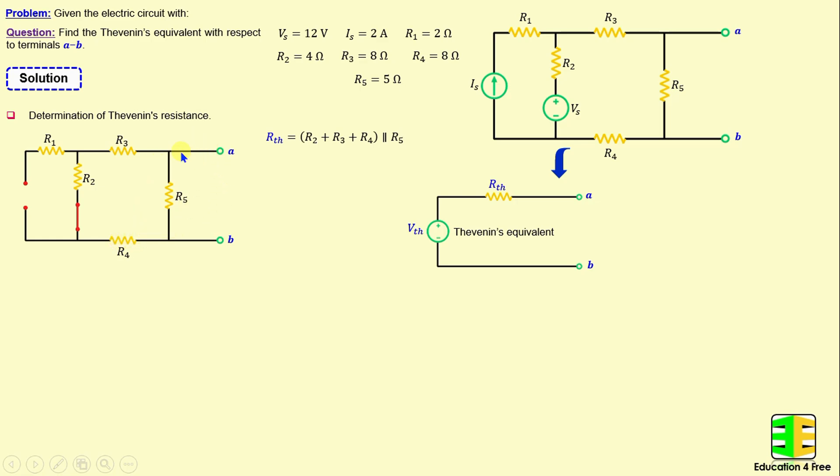Therefore, RTH can be calculated with the following formula, and if we replace R2, R3, R4, and R5 with their numerical values, we obtain RTH is equal to 4 ohms. After finishing the determination of Thevenin's resistance, we proceed to calculate the Thevenin voltage.